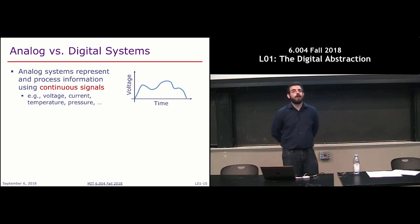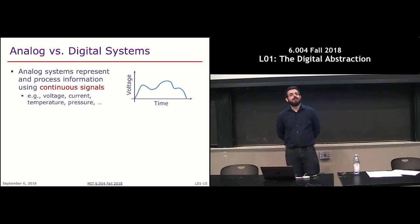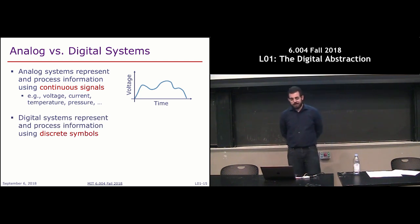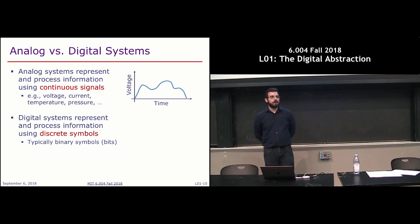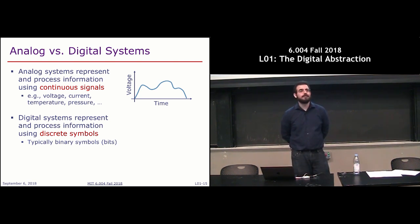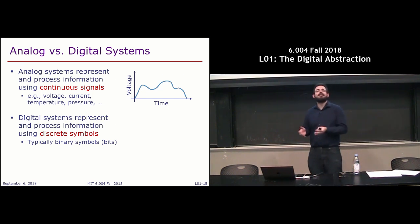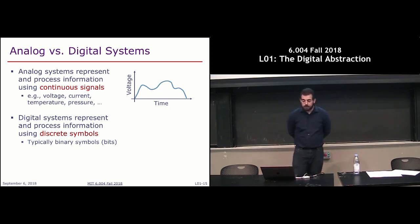You'll see systems that process voltage waveforms. Analog systems are a very natural choice because the world is analog — signals really are continuous. On the other hand, digital systems represent and process information using discrete symbols rather than continuous signals. These symbols are typically bits — zeros and ones, also called binary digits. You could use a wider dictionary of symbols like zero, one, two, three, but it's a discrete choice rather than a continuous quantity.